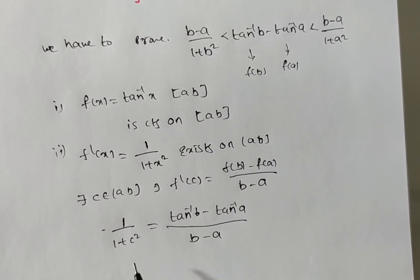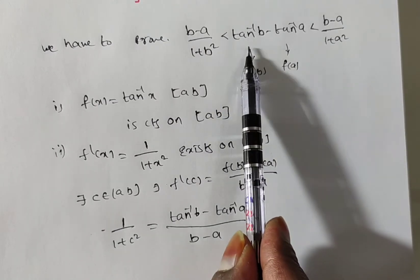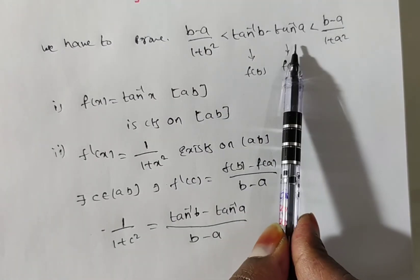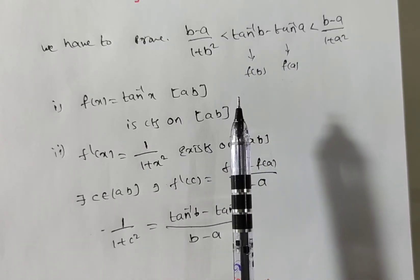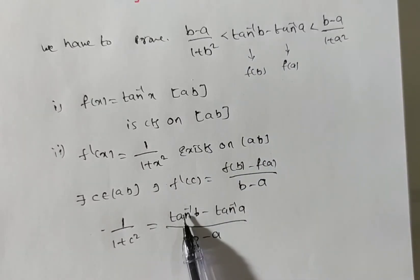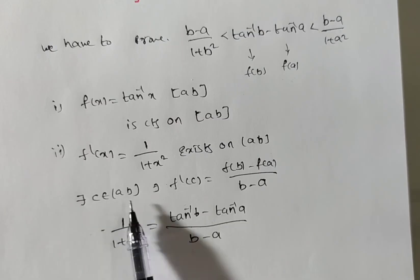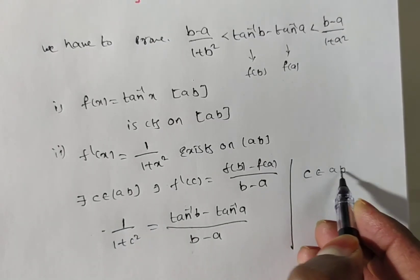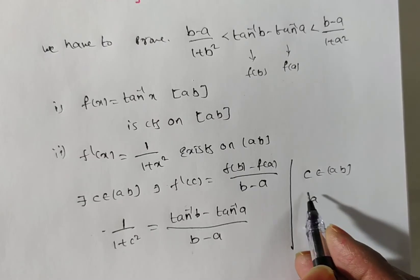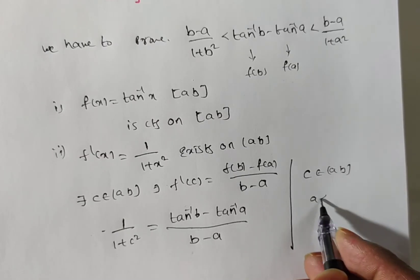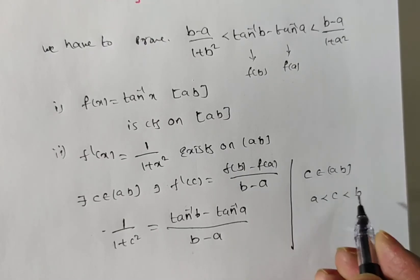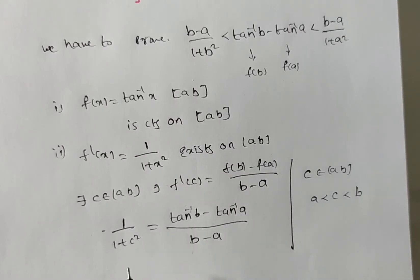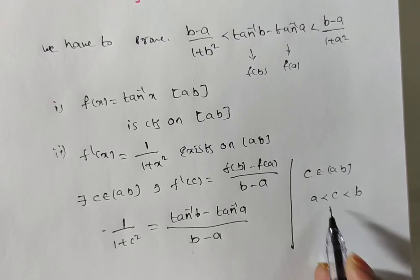Friends, you need to prove the inequality — you do not need to find the value of c. To get the inequality, note that c belongs to the open interval (a, b), meaning a is less than c is less than b. Now I want f'(c), which is 1 by (1 plus c square), so I need to work with this form.